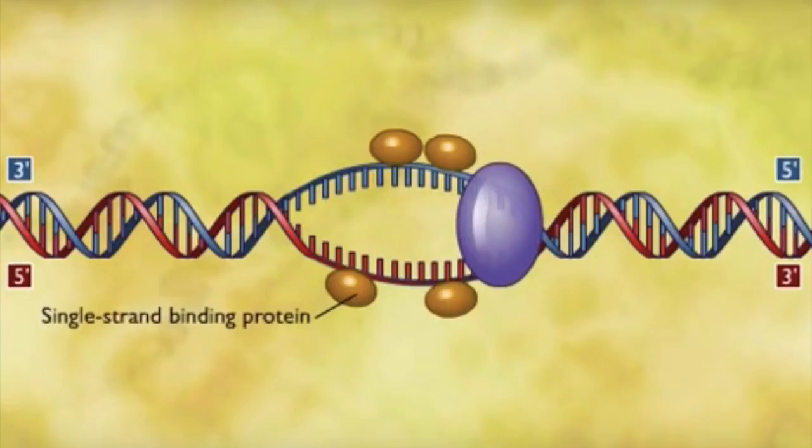The untwisting of the double helix causes tighter twisting and strain ahead of the replication fork. Topoisomerase helps relieve that strain by breaking, swiveling, and rejoining DNA strands.